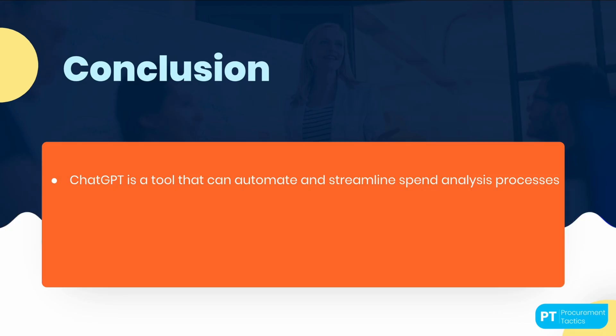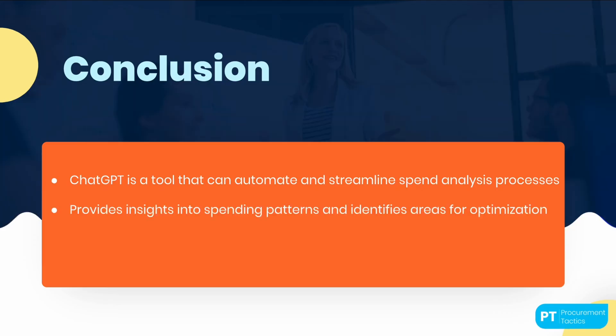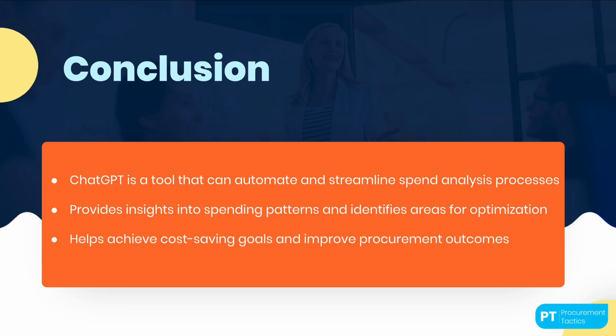To wrap it up, you can use ChatGPT to automate and streamline your spend analysis processes. By analyzing vast amounts of data quickly and efficiently, ChatGPT can provide you with insights into your spending patterns and help you identify areas where you can optimize your procurement processes. Whether it's predicting future spending patterns, detecting fraud, managing invoices, or optimizing spending, ChatGPT can help you achieve your cost-saving goals and improve your procurement outcomes.